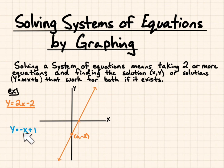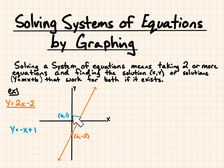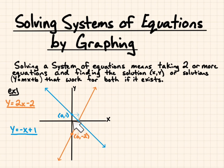Then we go to our next line, y equals negative x plus 1. We'll start at the y-intercept of positive 1 on our y-axis, then follow the slope of negative 1 — meaning every 1 positive we go in x, we go 1 negative in y. Now we see where they cross: they cross at x equals 1, y equals 0.